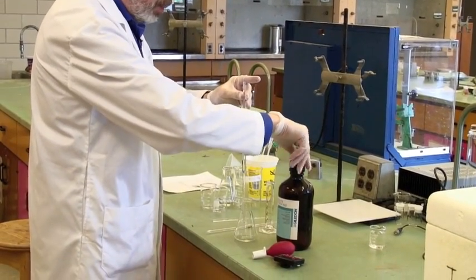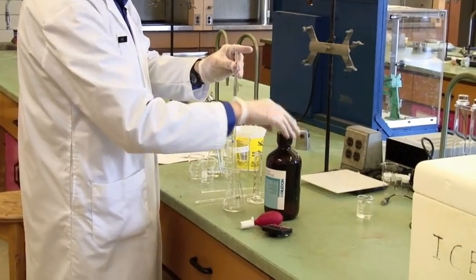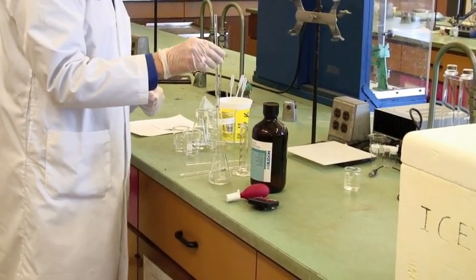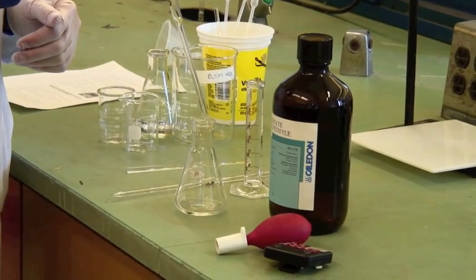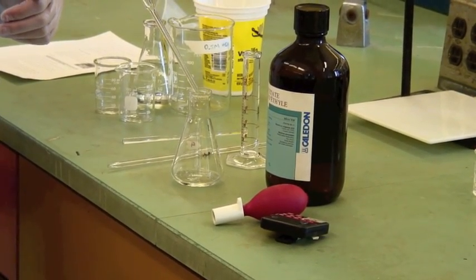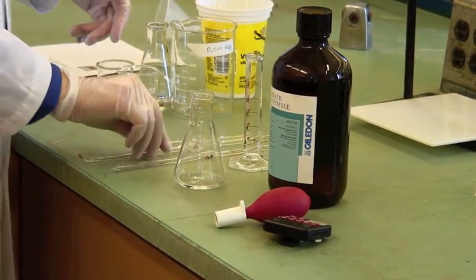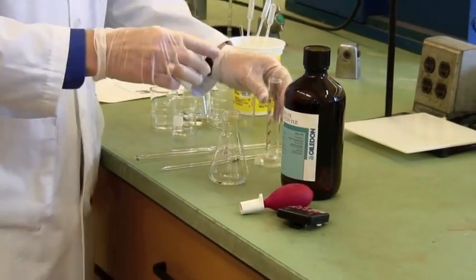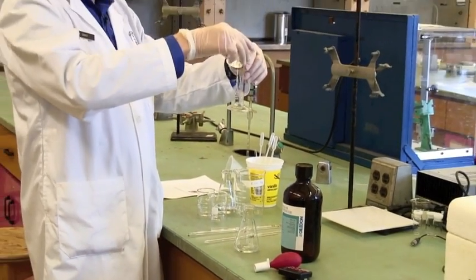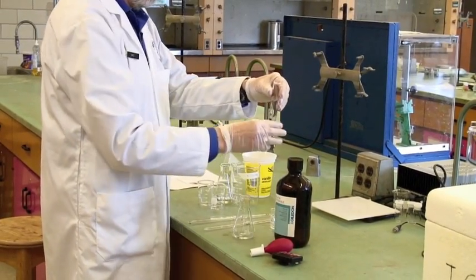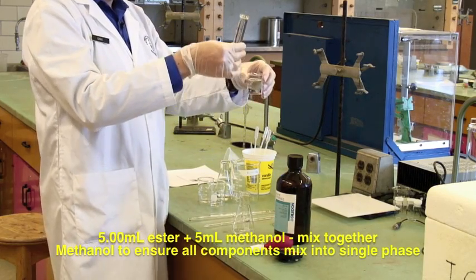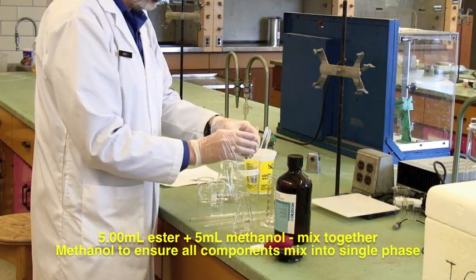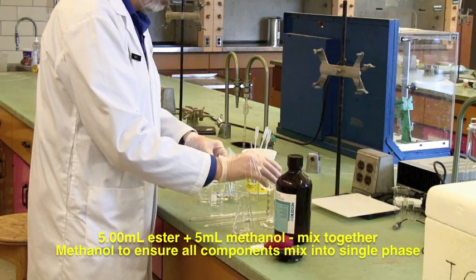We'll also be mixing the ethyl acetate with 5 mLs of methanol. Now, the methanol doesn't actually enter into the reaction. It's just there to make sure that the ethyl acetate actually mixes with the ester. They're not completely miscible.